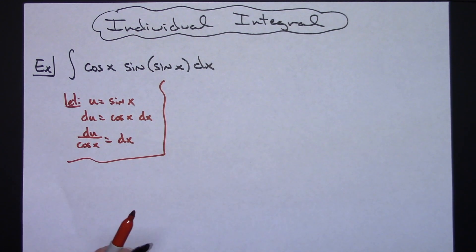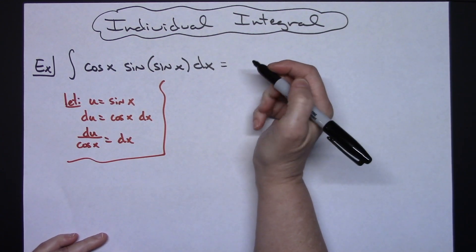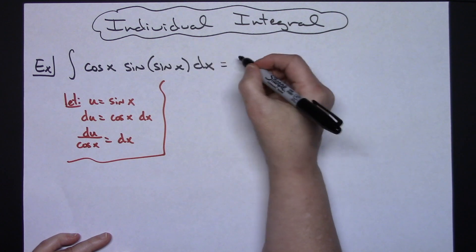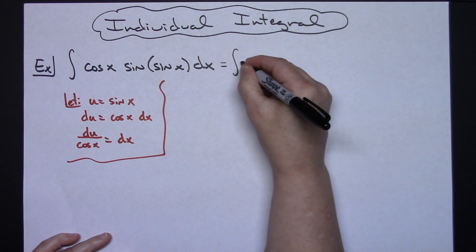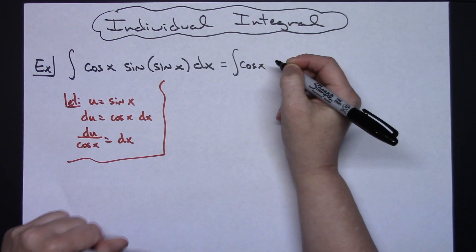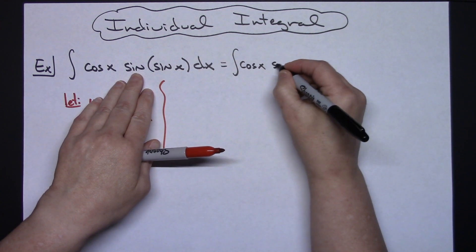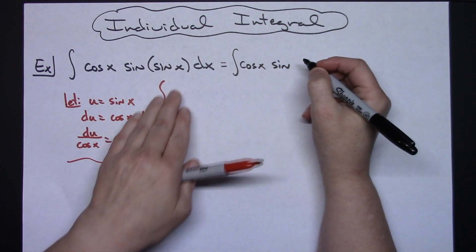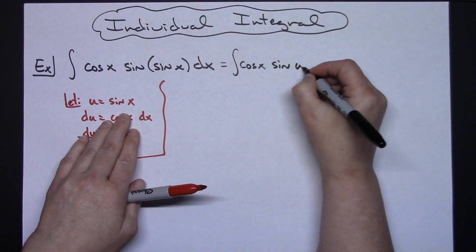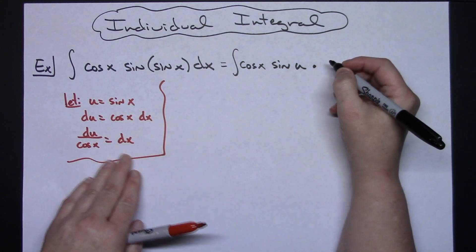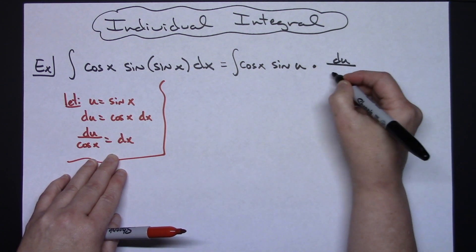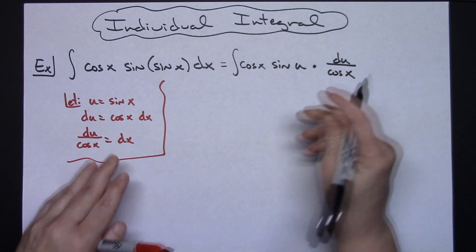We'll come back up here to the original problem, and now we will start some substituting. So we'll have the integral, we'll have cosine x, and then we'll have sine, replacing this sine x with our u, so we'll have a sine u. And then replacing dx with what it equals, we'll have a du over a cosine x.